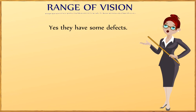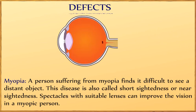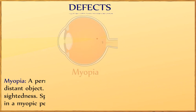Some of the vision defects are myopia. A person suffering from myopia finds it difficult to see distant objects clearly. This condition is called short-sightedness or near-sightedness. Spectacles with suitable lenses can improve the vision in a myopic person.